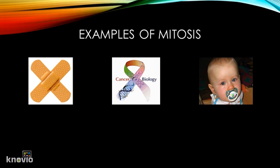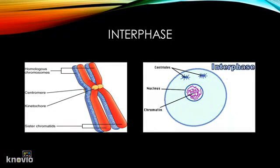Now that we have established what mitosis is, we are going to break it down into the specific steps of mitosis. The first step is interphase. For most of their lives, cells are in this stage called interphase. In this stage, they are mostly growing. During interphase, strands of DNA are messy and loosely coiled.